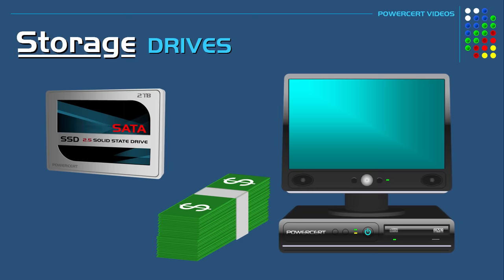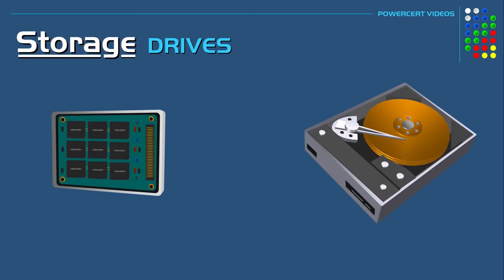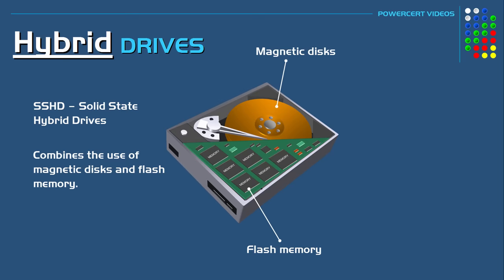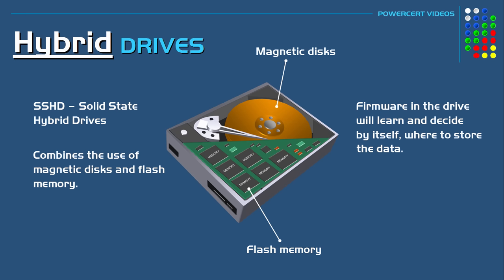There is also a solution where you can have an SSD and a hard drive as one physical drive instead of two separate drives. These are called SSHDs, or solid state hybrid drives. Hybrid drives combine the use of magnetic disks and flash memory, taking advantage of the large capacity and low cost of magnetic disks with the speed of an SSD. In a hybrid drive, the magnetic disks store data while the flash memory is used for caching. The firmware in the drive learns and decides by itself where data will be stored — frequently accessed files are cached on the flash memory, while infrequently used data is stored on the disks.